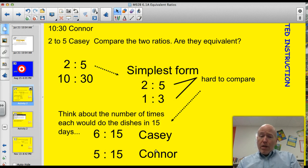Well, we see that Connor's doing a little bit less. He's doing 5 to 15 when we compare those ratios, and Casey's doing 6 to 15. So Connor's trying to outmaneuver his brother on this one. This is not fair. These ratios are not equivalent. Alright. Our target tonight is going to be a little bit simpler than our problem. All we're going to need to do is determine whether or not two ratios are equal or not.